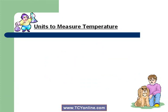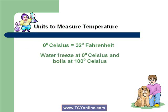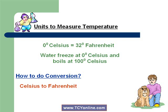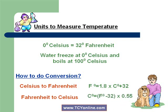Now let's look at the two different units used to measure temperature: degree Celsius and degree Fahrenheit. There is a relation between them — 0 degrees Celsius means 32 degrees Fahrenheit. We also know that water freezes at 0°C and boils at 100°C. To convert Celsius to Fahrenheit, we use: °F = 1.8 × °C + 32. While to convert Fahrenheit to Celsius, we use: °C = (°F − 32) × 0.55.